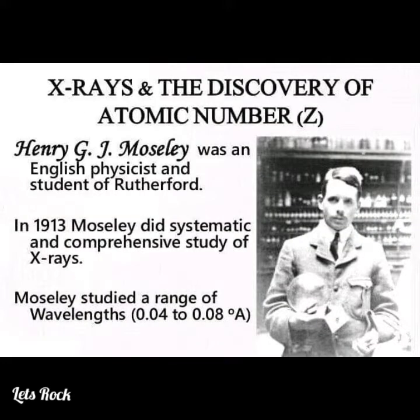X-rays and the discovery of atomic numbers. Henry G. J. Moseley was an English physicist and student of Rutherford. In 1913, Moseley did a systematic and comprehensive study of X-rays, studying a range of wavelengths from 0.04 to 0.08 angstroms.